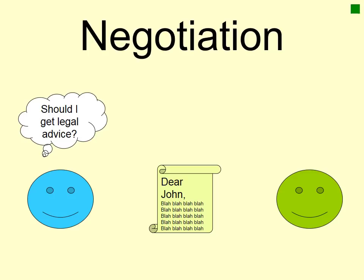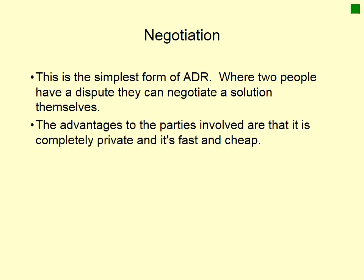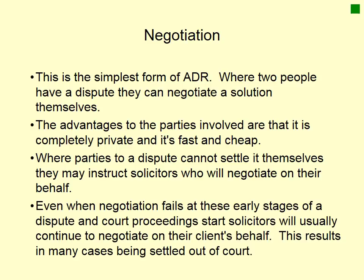The final method of dispute resolution is negotiation — the simplest form. Essentially, two people with a dispute negotiate to come up with a solution themselves. An advantage is that it's completely private, quick, and cheap — it could in theory have no costs at all. Where parties can't settle themselves, they might instruct a solicitor to negotiate on their behalf. Even when negotiation fails at early stages, solicitors can negotiate right up until the court hearing to try to solve the issue and avoid further costs.